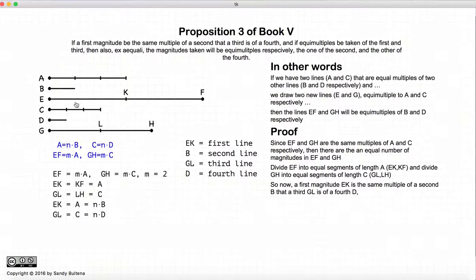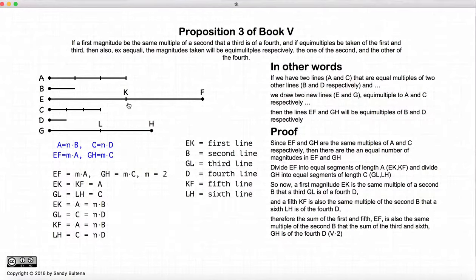So now we have EK is equal to B, and GL is equal to D, since they're both equal to the original lines respectively. We also have that KF is equal to B as LH is equal to D. So now we have six lines. One, two, three, four, five, and six. And these six lines represent what we showed in Proposition 2.